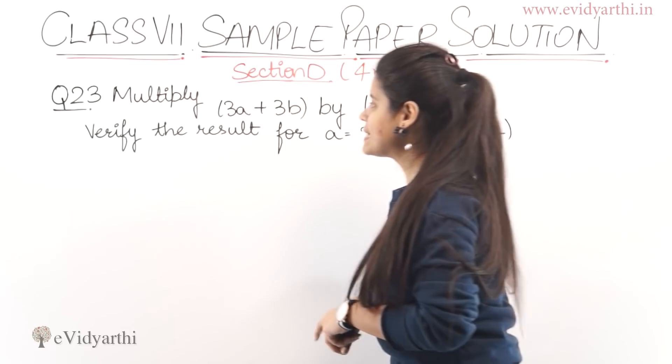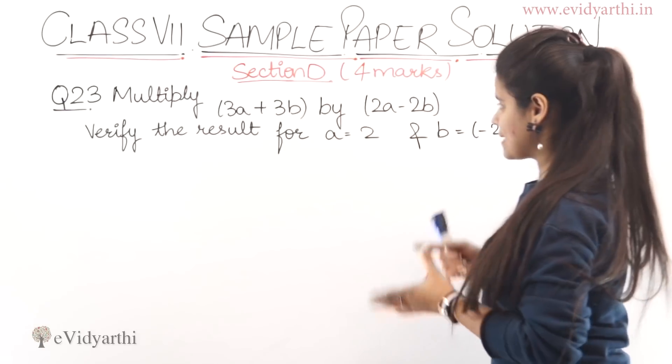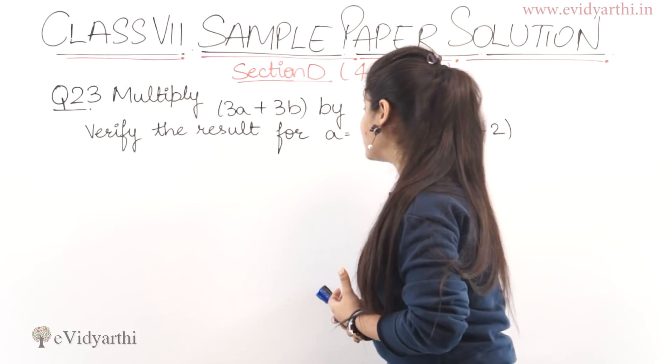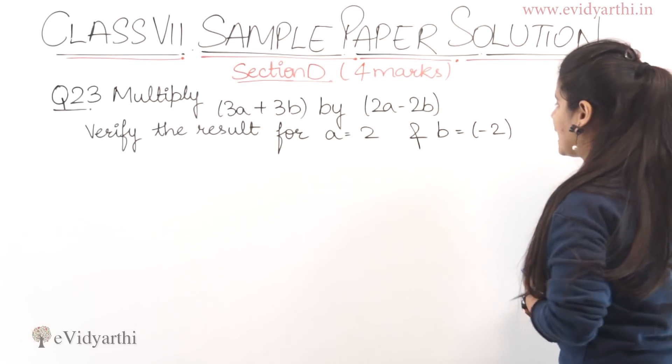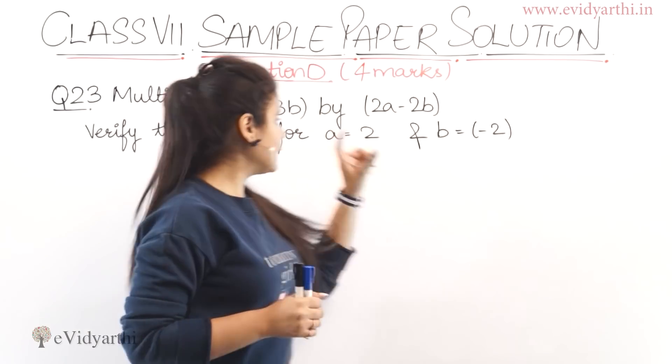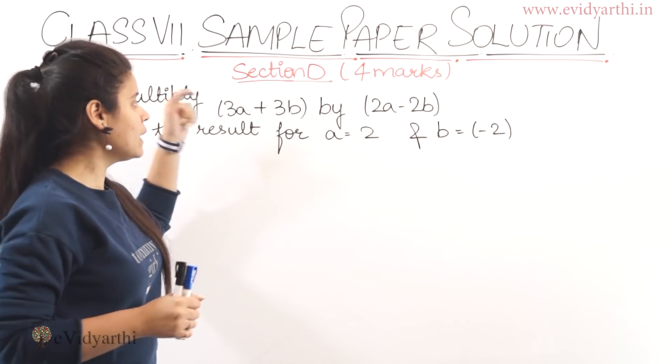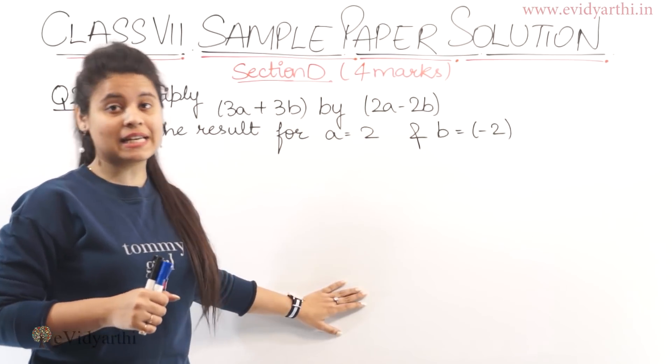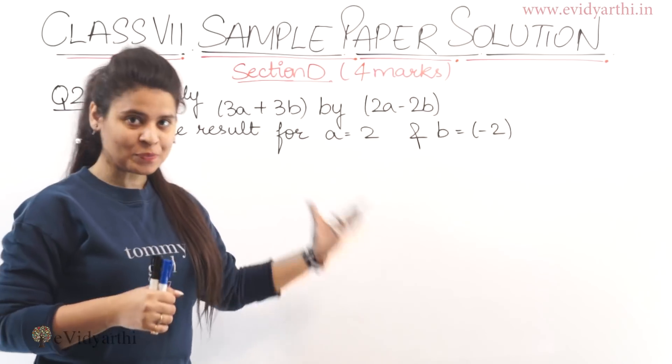Question number 23 says multiply 3a plus 3b by 2a minus 2b. Verify the result for a equals 2 and b equals minus 2. First of all you have to multiply and then we have to substitute values and verify the answer.